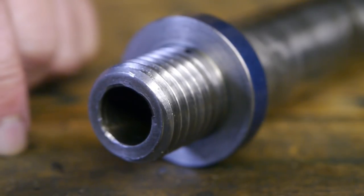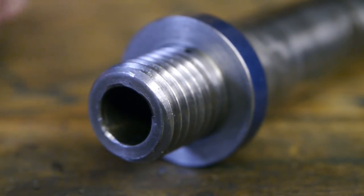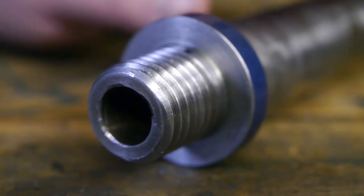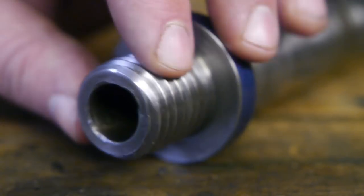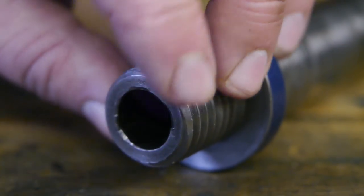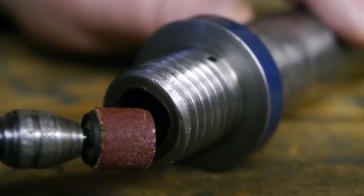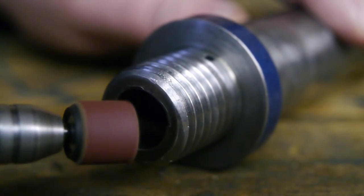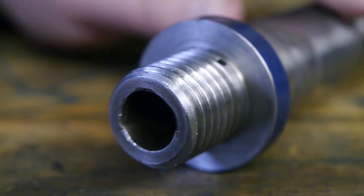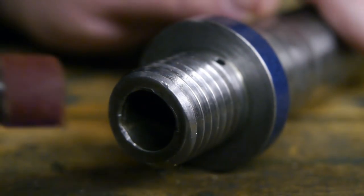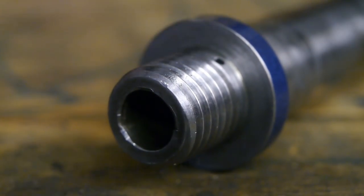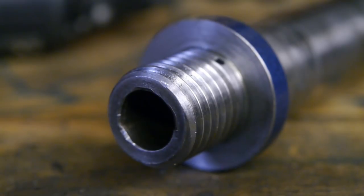But before I can do this I need to clean up this edge here. There is some damage and it's pretty sharp and it will damage my live center, so I'm going to try and remove the burr with my Dremel. I'll do this off camera because I don't see nothing.